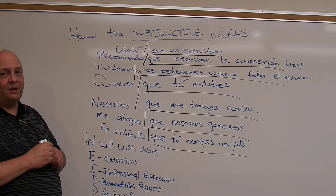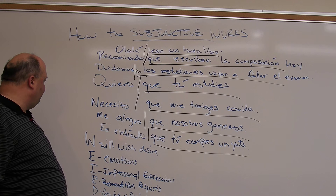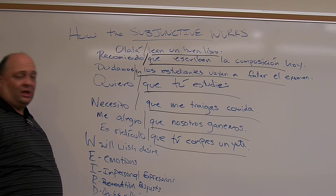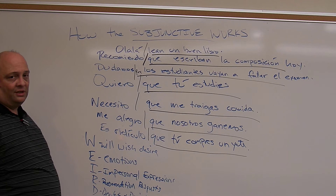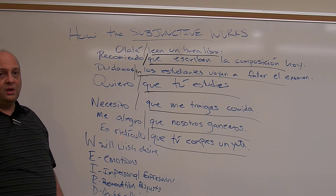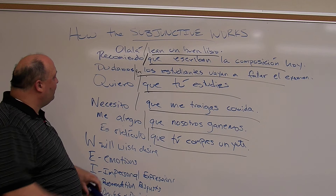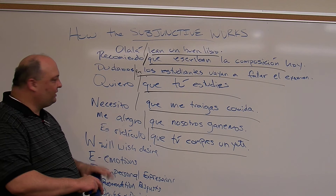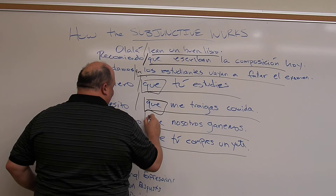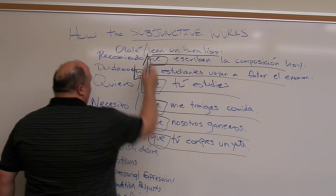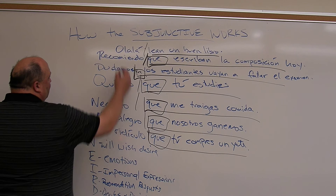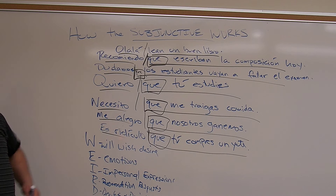These are the ones we're primarily going to work with this semester — will, wish, desire, emotions, impersonal expressions, recommendations, requests, doubt, denial, and ojalá. We'll get a lot of practice — chapters 12, 13, and 14 are all about the subjunctive. All of those trigger the subjunctive. The key thing to look at is the 'que' — it's the verb that comes right before the 'que' that matters. If what comes before it puts any kind of uncertainty into the situation, then the subjunctive has to follow.